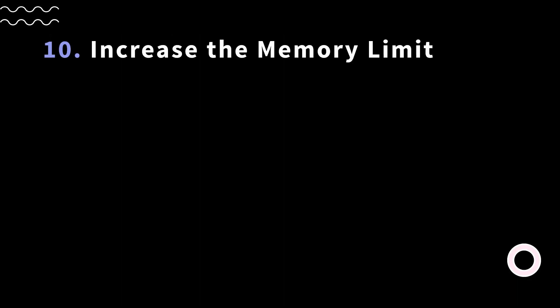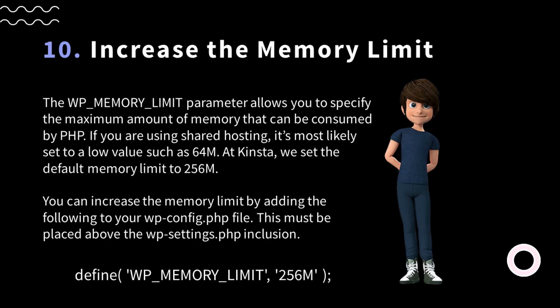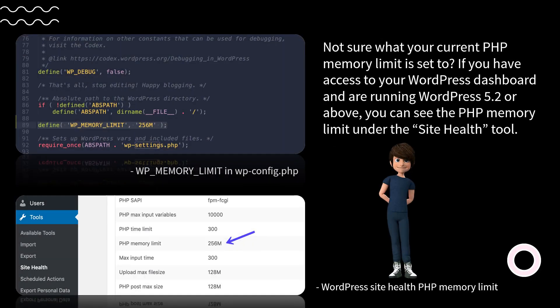The tenth method: increase the memory limit. The wp_memory_limit parameter allows you to specify the maximum amount of memory that can be consumed by PHP. If you are using shared hosting, it's most likely set to a low value such as 64M. You can increase the memory limit by adding the following to your wp-config.php file, placed above the wp-settings.php inclusion: define('WP_MEMORY_LIMIT', '256M'). You can see the current PHP memory limit under the Site Health tool if you're running WordPress 5.2 or above.